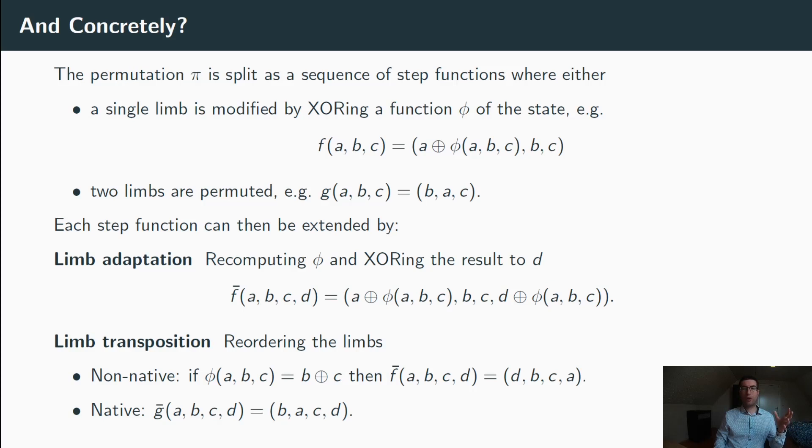But where we really gain in terms of performance is by extending a step function using the limb transposition method. A limb transposition is just a reordering of the limbs in the code-abiding permutation. This is what happens, for example, when a step function replaces one limb by the sum of the others. Since the parity limb D already contains the sum of the other limbs, one can simply swap the limb to be modified with the parity limb in order to extend this step. This is what we call a non-native limb transposition and is particularly interesting because it can basically be implemented for free in the code-abiding permutation, while it costs two XORs in the original permutation. Note also that this method is highly dependent on the error detecting code that we chose for our permutation.